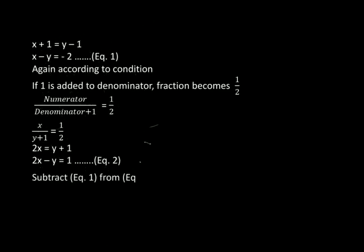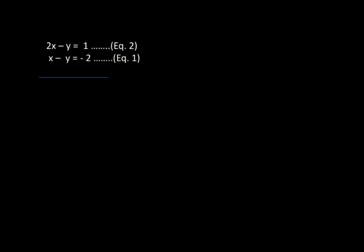Now subtract equation 1 from equation 2. In both equations the coefficient of y is the same and their signs are also the same, so we subtract. Equation 2: 2x minus y equals 1. Equation 1: x minus y equals minus 2. Subtracting, the signs are reversed, so minus y and plus y cancel out. 2x minus x equals x, so x equals 3.